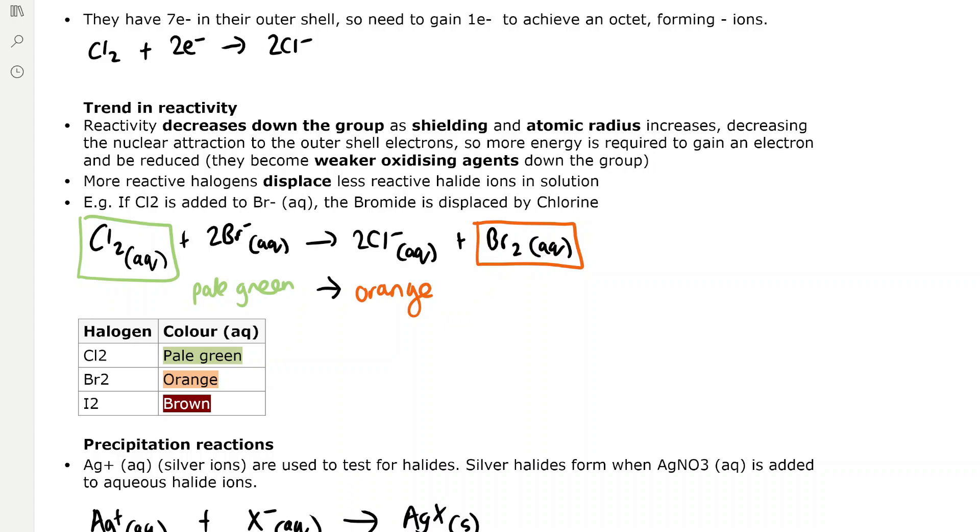There's a trend in reactivity. Reactivity decreases down the group because shielding and atomic radius increases, which decreases the nuclear attraction to the outer shell electrons. More energy is required to gain an electron and be reduced, so they become weaker oxidizing agents down the group. An oxidizing agent is reduced, gaining electrons from the element that is oxidized.